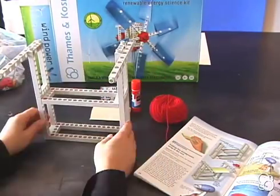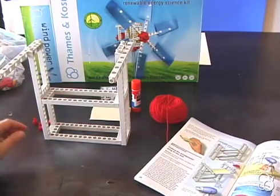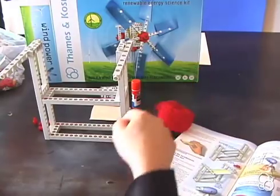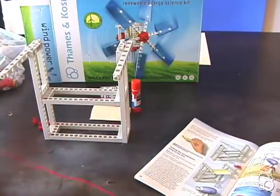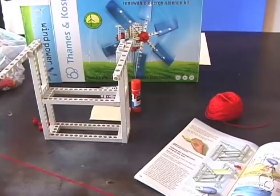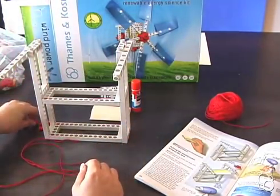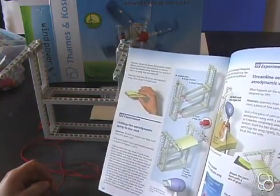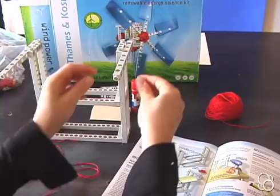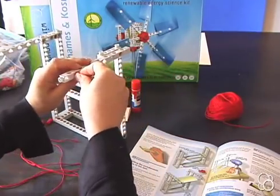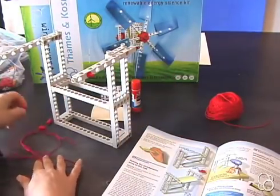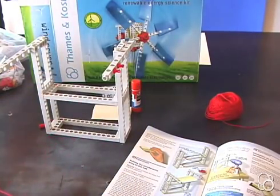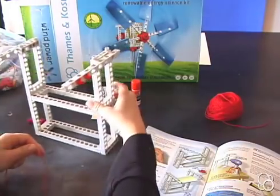And once those are in, we're going to take some string, we can cut somewhat of a long piece so you have some room. And first we're going to actually put the two shaft plugs in. So they should be in the second and third holes on the outside. So right here and right here. And then we can tie the string to one of them.